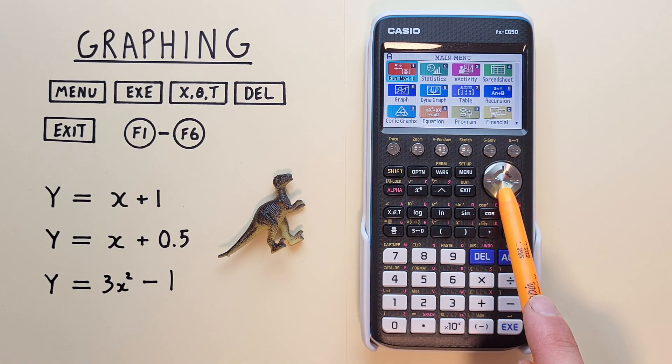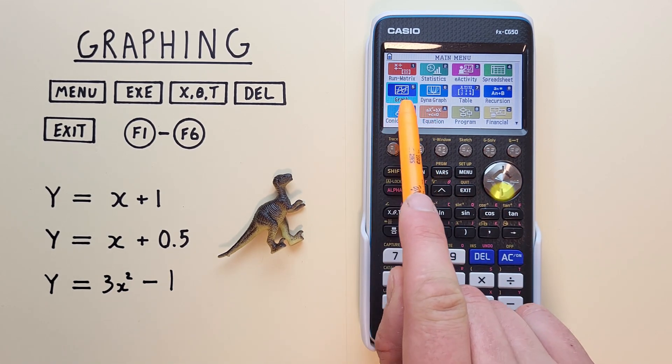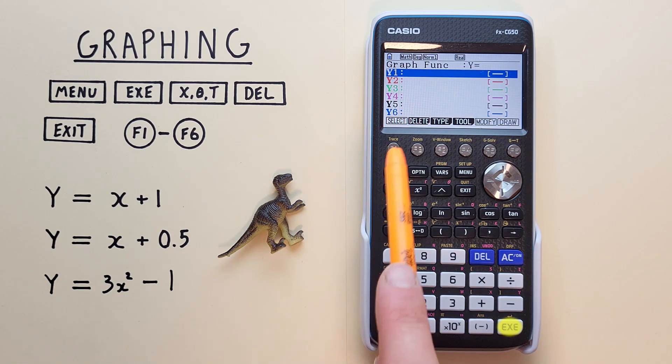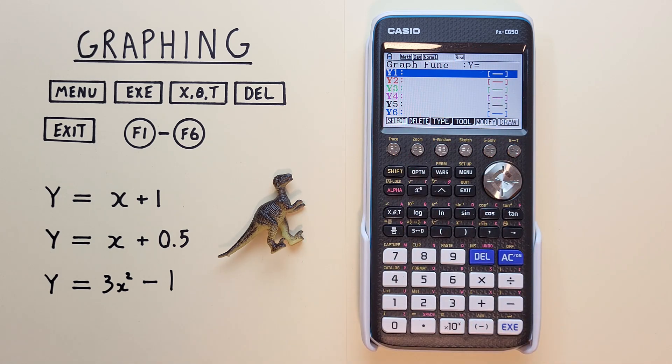and then scroll down to graph here so that it's highlighted, and then hit the exe so that we're here at the graphing function entry menu.